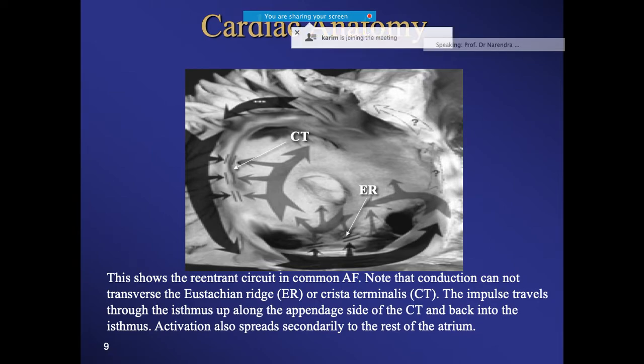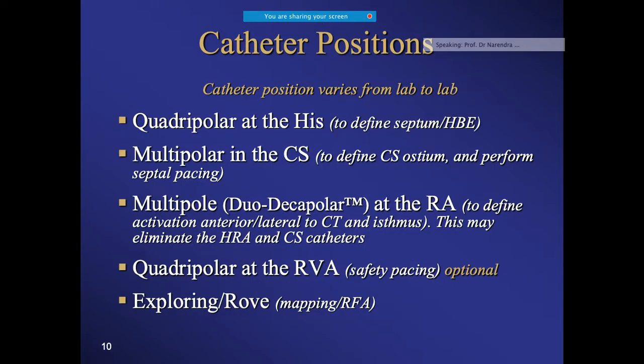The cavo-tricuspid isthmus is the slow conduction area where, if you create a blockage, you will be able to not only terminate the atrial flutter but also prevent its future recurrence.